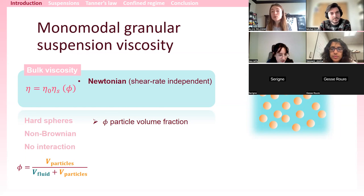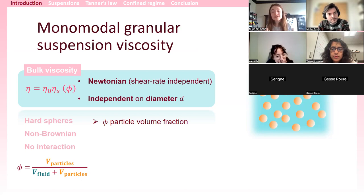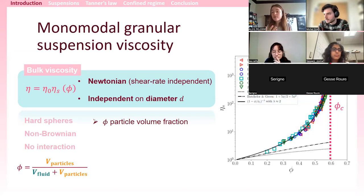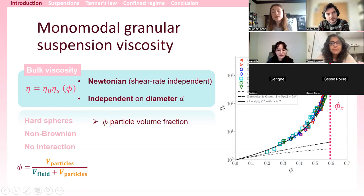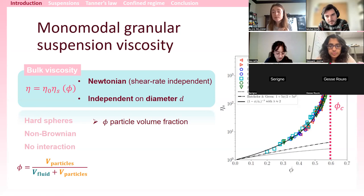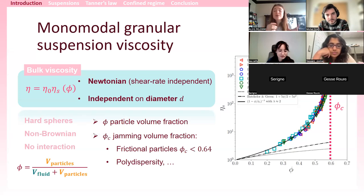For a monomodal suspension with one particle size d, the viscosity does not depend on particle diameter — whatever the particle size, the viscosity will be the same provided you have the same particle volume fraction φ. This is well confirmed by experiments and numerical simulations: different suspensions made of different fluids and particles show a very nice collapse on the same master curve. The relative viscosity diverges at φ_c, the jamming volume fraction — the maximum amount of solid before particles can no longer move.